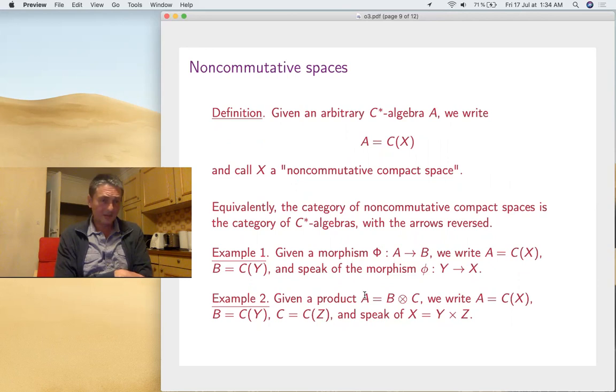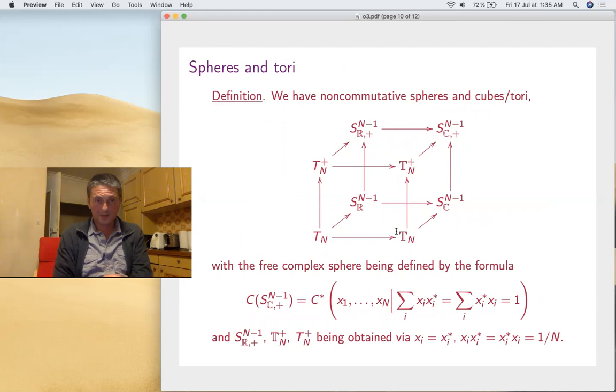So this was more or less the basic theory. Now let's have some fun with it. The Gelfand theorem says commutative algebras are C(X). In general, any C*-algebra can be thought of as being C(X) with X noncommutative. For those into details, the category of noncommutative compact spaces is exactly the category of these algebras with the arrows reversed. These spaces now have no points, but they perfectly exist from this categorical point of view. For example, when we have a morphism, we'll talk about a morphism of spaces. In the other sense, with a tensor product of algebras, we'll talk about the product of spaces. It's a bit philosophical.